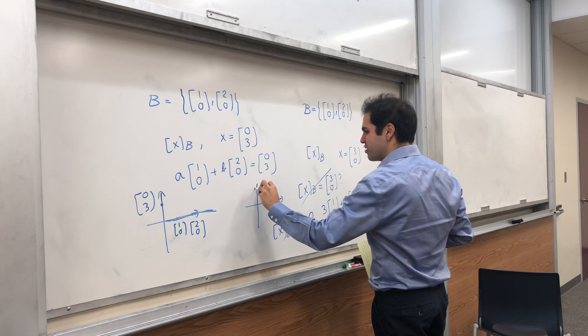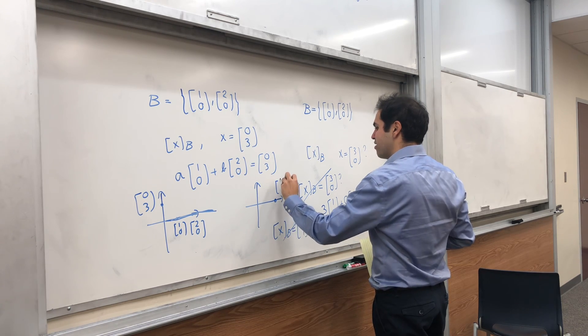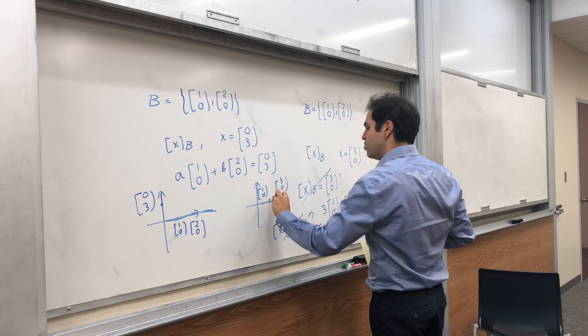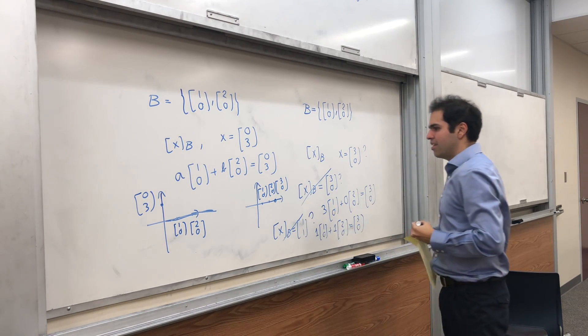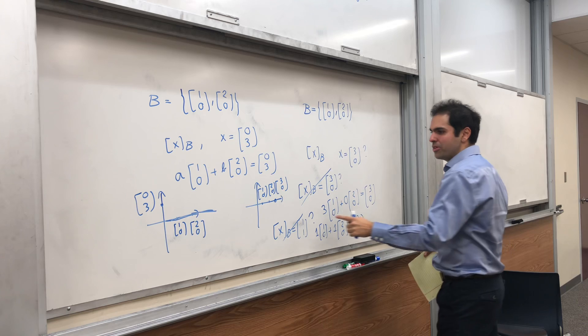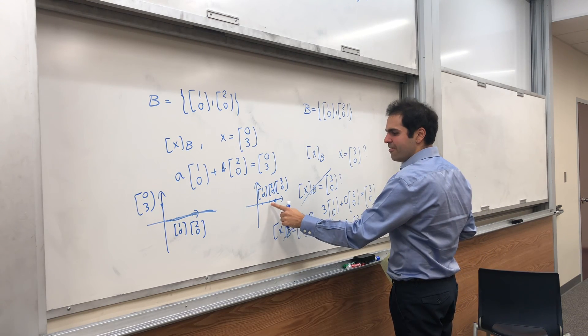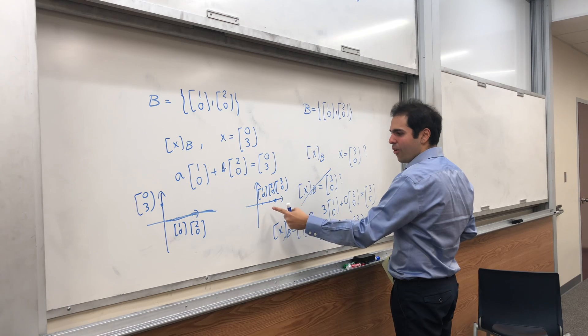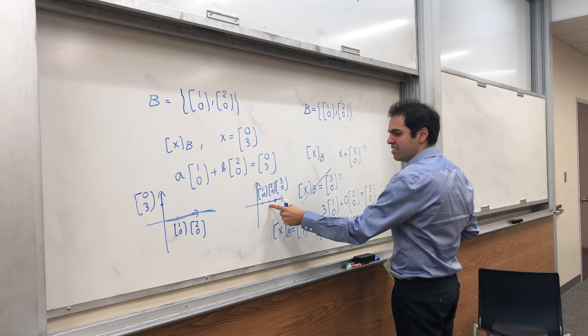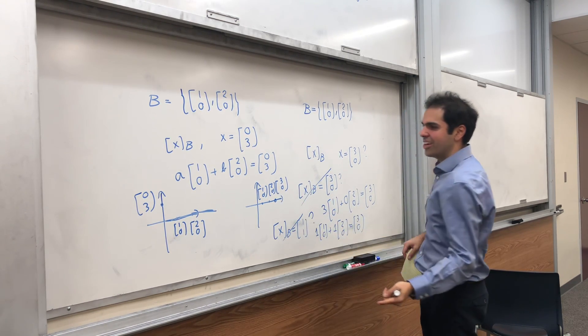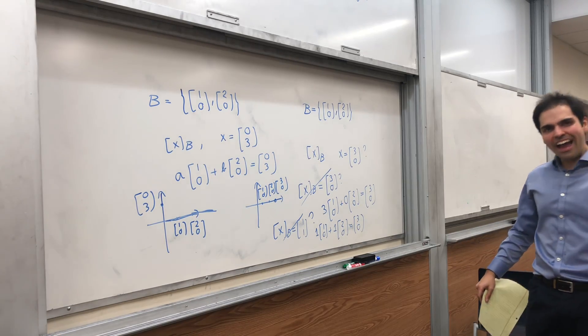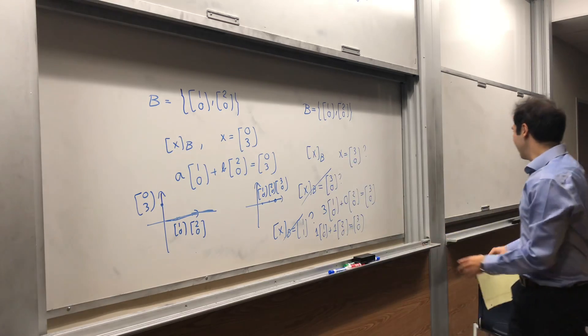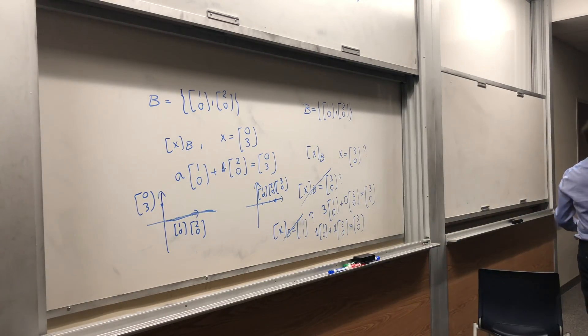And again, in terms of pictures, we have the vector (3,0), and then (1,0), and (2,0). On the one hand, what you could do, you can take three steps in this direction and no steps in this direction to get this. Or you can take one step in this direction and one step in this direction to get this. And ideally, we would like to have exactly one way of getting to the point (3,0). So that would be nice.